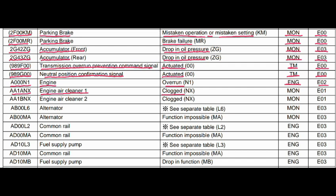Code AA1ANX. Where is the problem? Engine air cleaner 1. What is the problem? Clogged. Monitor controller and monitoring panel control are related to this fault. Code A1A1BNX — where is the problem? Engine air cleaner 2. What is the problem? Clogged. Monitor panel control is related to this fault, and the action code is E01.